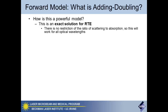How is this a powerful model? This is an exact solution of the radiative transport equation. Being so, there is really no restriction on the ratio of scattering or absorption — this is not like the standard diffusion approximation, which only works in certain areas of absorption and scattering. Adding-doubling is insensitive to that. The catch is: the equation is an exact solution, but whether you can measure it — that becomes the trick. The model itself is insensitive to whatever values of absorption or scattering you have, and there are really no restrictions on the anisotropy of your sample.